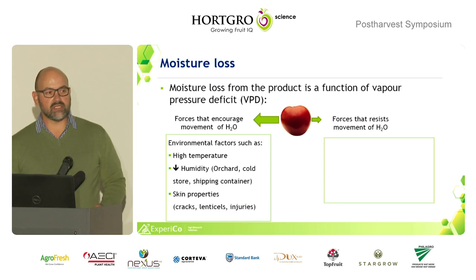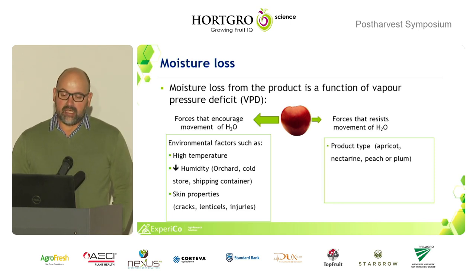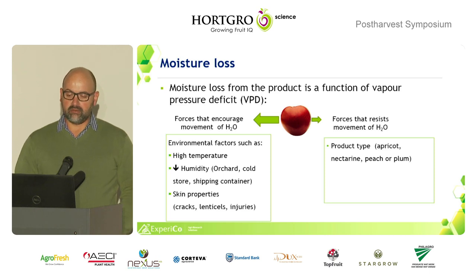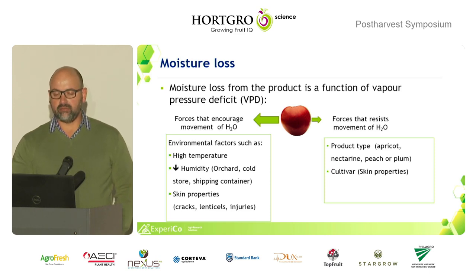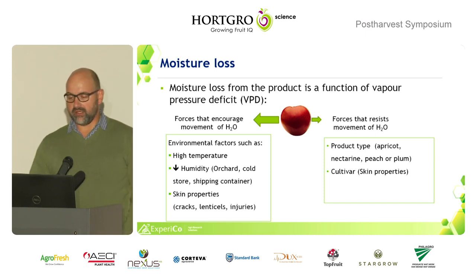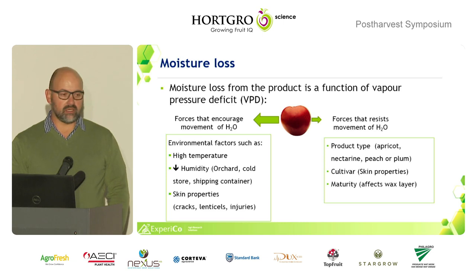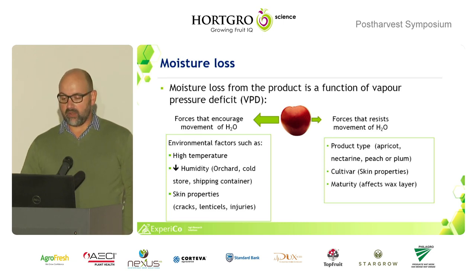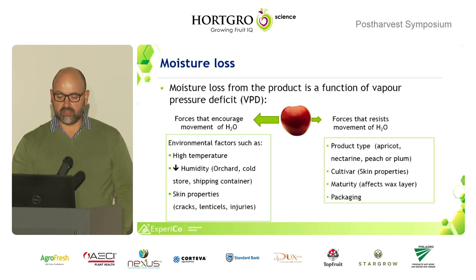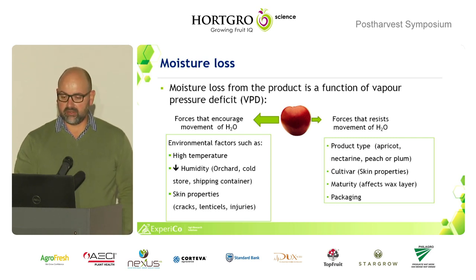There are also forces that resist the movement of water. These include product type — apricots, nectarines, peaches and plums differ in susceptibility to shrivel. Different cultivars are more susceptible than others due to skin properties, and maturity also plays a role. Your wax layer on the fruit skin and packaging can also be used to limit moisture movement.